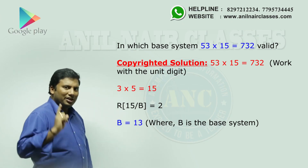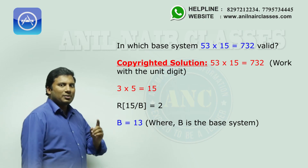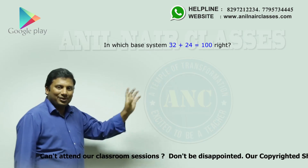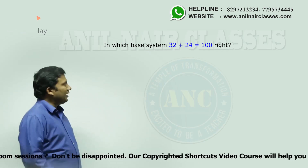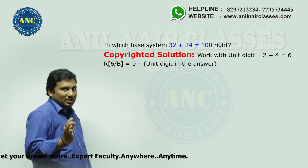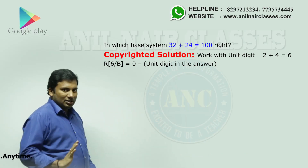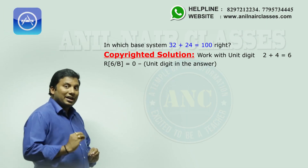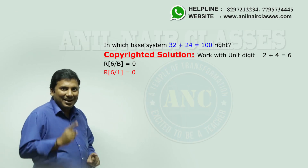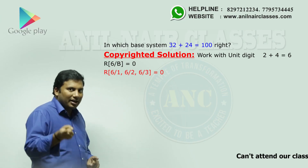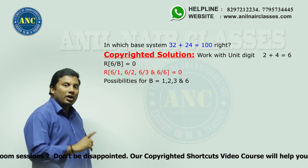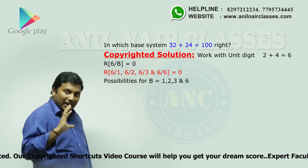A smart student watching this video will get a doubt, and I will explain that doubt as part of the video. Let us take a third question — put a star mark on it. 32 + 24 = 100. In which base system is this expression right? Step 1: attack the unit digit on the left hand side. 2 + 4 = 6. 6 divided by which base system gives 0 as the remainder? 6 is a composite number, so 6 ÷ 1, 6 ÷ 2, 6 ÷ 3, and 6 ÷ 6 all give remainder 0. Does that mean the question is right in four base systems? No — listen carefully.